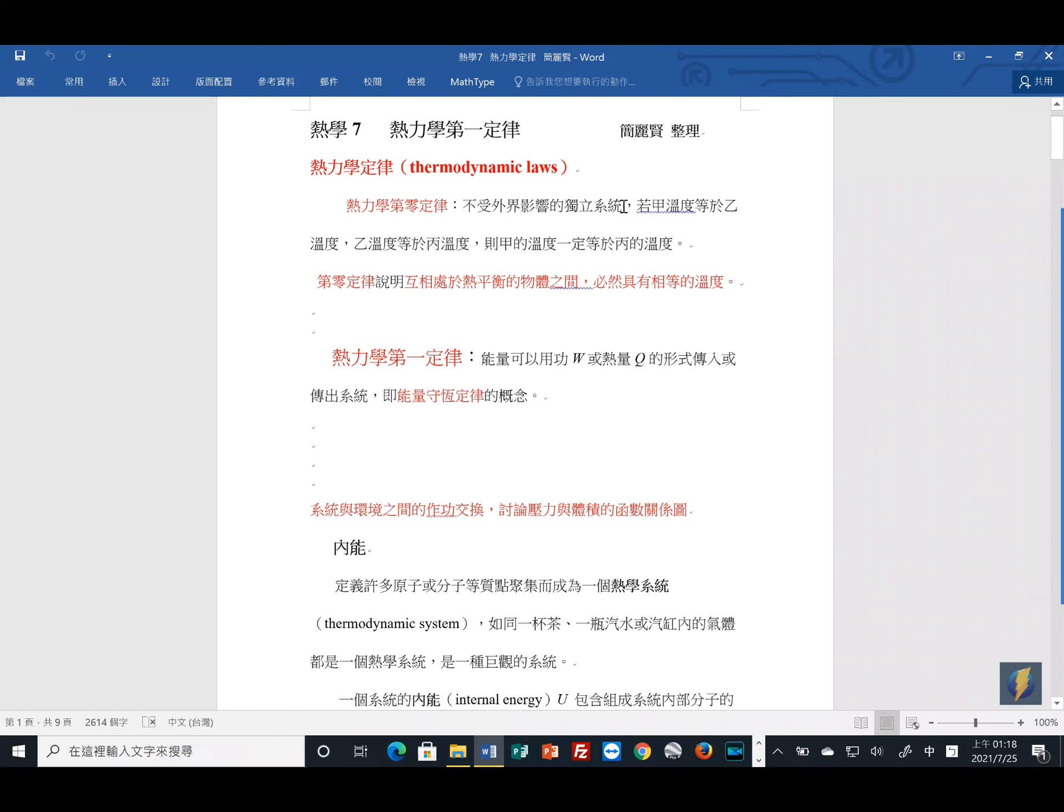我们学过热力学提到的是不受外界影响的独立系统。如果甲的温度等于乙的温度,乙的温度等于丙的温度,那么甲的温度一定等于丙的温度。这个概念就是达到热平衡,因此这个定律我们称为热力学第零定律。